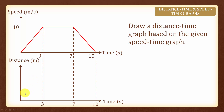First, we need to find the different shapes between these different intervals, and we will need to find the distance at t equals to 3, t equals to 7, and t equals to 10.